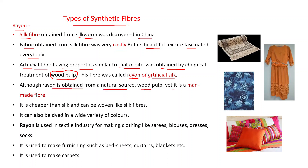Although rayon is obtained from a natural source — wood pulp — it is still a man-made fiber. It is cheaper than silk and can be woven like silk fibers. It can also be dyed, meaning it can be converted into different colors — it can be colored in a wide variety of colors.